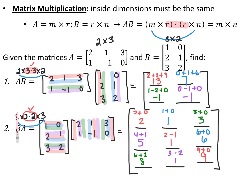For B times A: B is 3 by 2 and A is 2 by 3, so their inside dimensions match (both 2), and the resulting matrix will be 3 by 3. Matrix multiplication is not commutative — A times B gave a 2 by 2, while B times A gives a 3 by 3. Multiplying rows by columns: first row first column gives 2, first row second column gives 1, first row third column gives 3. Second row: 5, 1, 6. Third row: 8, 1, and positive 9.